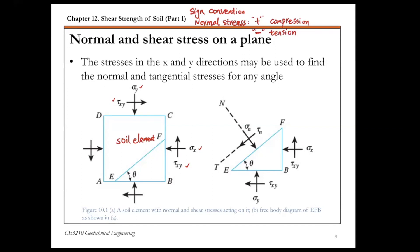One simple reason is that most of the time in geotechnical engineering, soils are under a compressive state. Soils are good at sustaining compression but not good at sustaining tension. Looking at the diagram, both sigma y and sigma x are positive because they are compressing this soil element, so by our sign convention this is compressive stress.